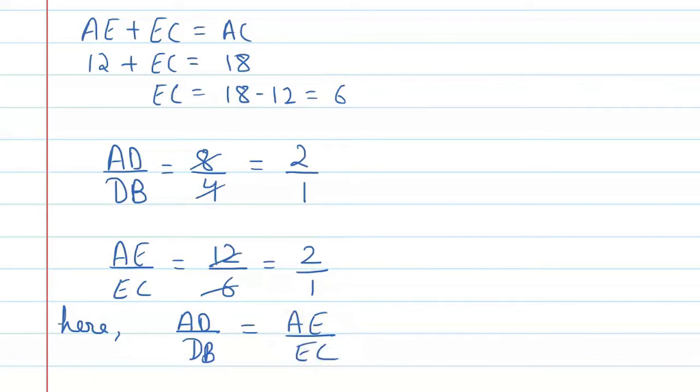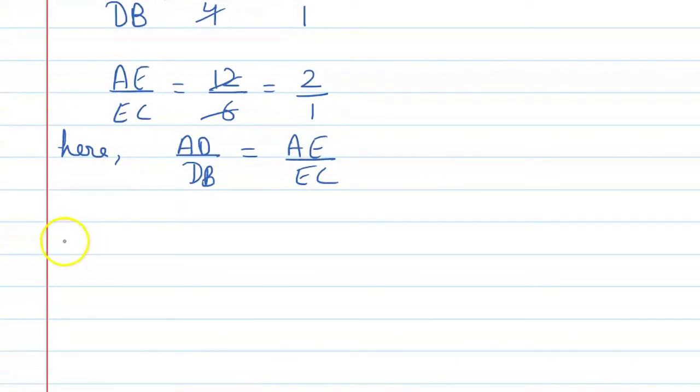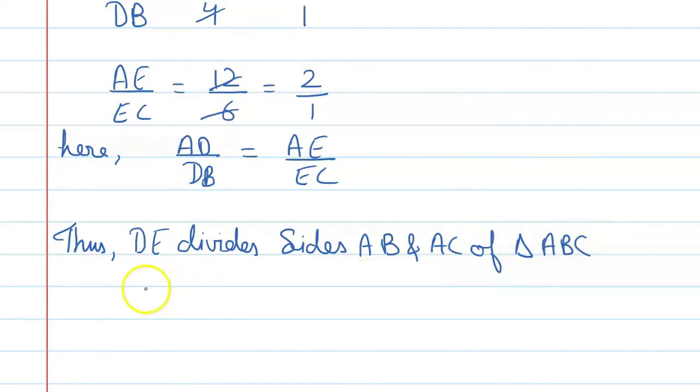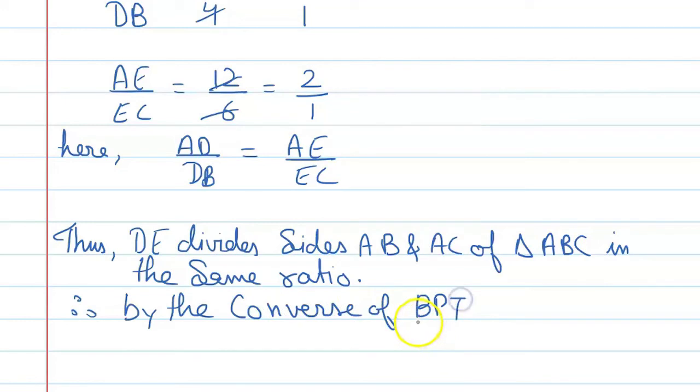So, if we check this condition, what can we say? First, DE divides sides AB and AC of triangle ABC in the same ratio. Therefore, by the converse of BPT - BPT means basic proportionality theorem - we have DE is parallel to BC.